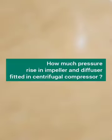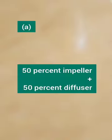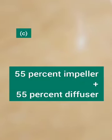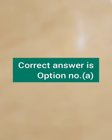How much pressure rise in impeller and diffuser fitted in centrifugal compressor? Option A: 50% impeller plus 50% diffuser. Option B: 70% impeller plus 70% diffuser. Option C: 55% impeller plus 55% diffuser. The correct answer is Option A — 50% impeller plus 50% diffuser.